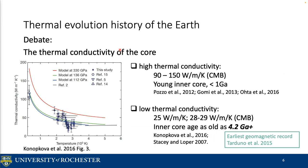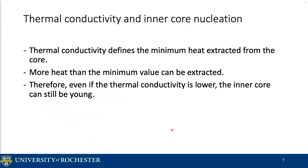Another way to study inner core nucleation is from the thermal evolution history of the Earth. This is straightforward because the inner core was formed when the temperature drops below the freezing point of iron. However, there is a debate regarding the thermal conductivity of the core. Both high and low thermal conductivity are reported. High thermal conductivity ranging from 90 to 150 W/m/K leads to a young inner core, for example younger than 1 Ga. Low thermal conductivity of about 30 W/m/K leads to a really old inner core age, as old as 4.2 Ga. However, the thermal conductivity only defines the minimum heat extracted from the core — more heat can be extracted — so even with lower thermal conductivity, the inner core can still be young.